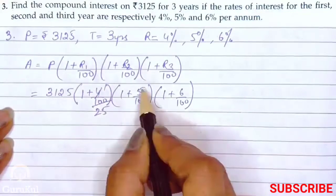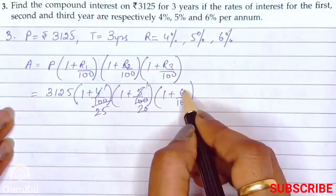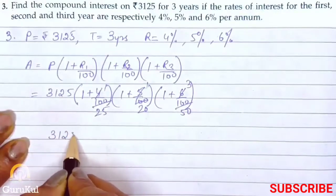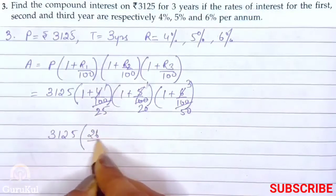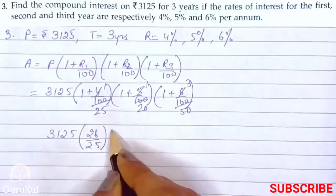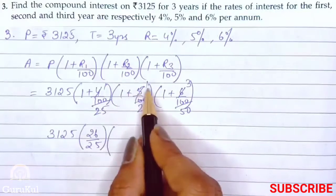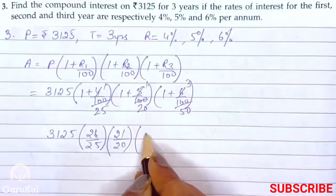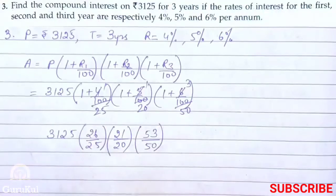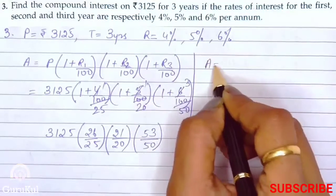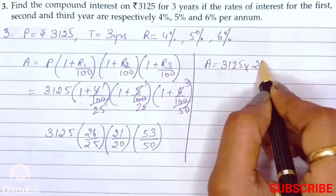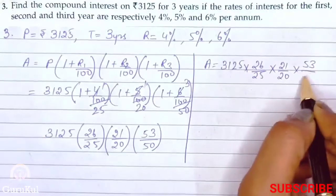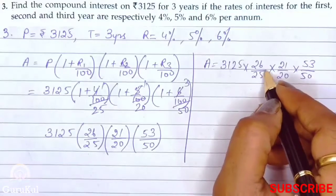So reducing the fractions: 4 gives 1 and 25, 5 gives 1 and 20, and 6 by 100 reduces to 3 by 50. So we get 26 by 25, 21 by 20, and 53 by 50. So the amount is equal to 3125 into 26 by 25 into 21 by 20 into 53 by 50. Now 25 and 3125 get cancelled — 3125 divided by 25 gives 125.